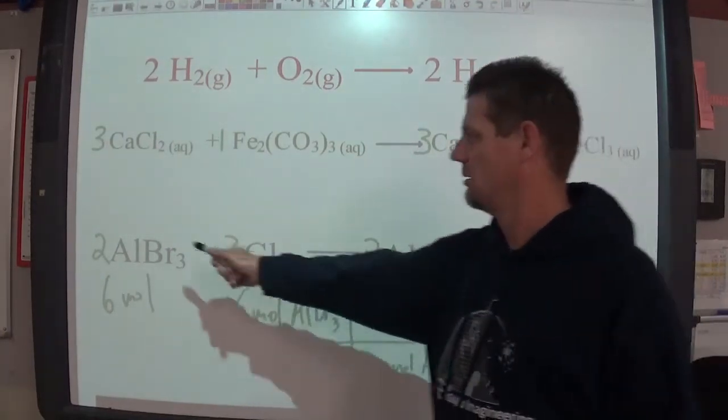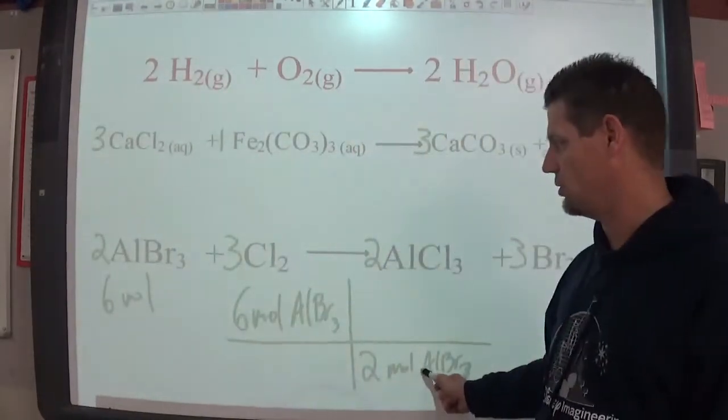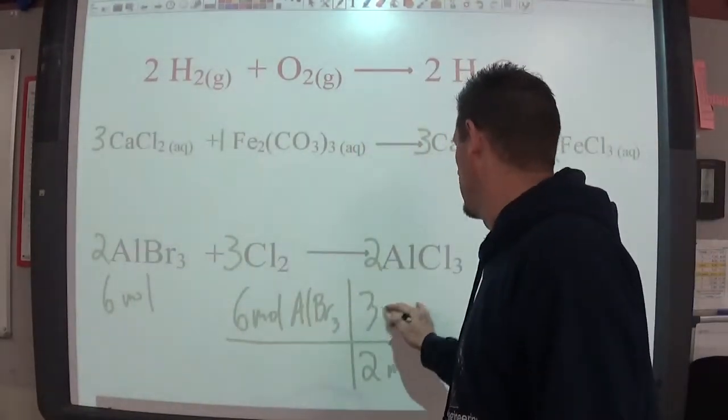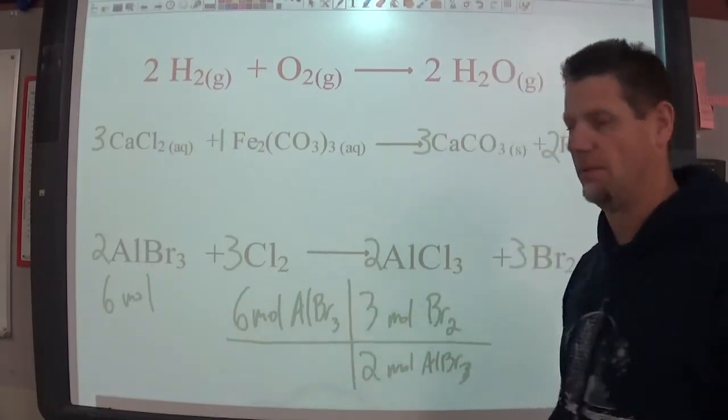For every two moles of aluminum bromide that I begin with, that's a three, that's this number, that's how many moles I'm starting with, I can make three moles of bromine as an element.